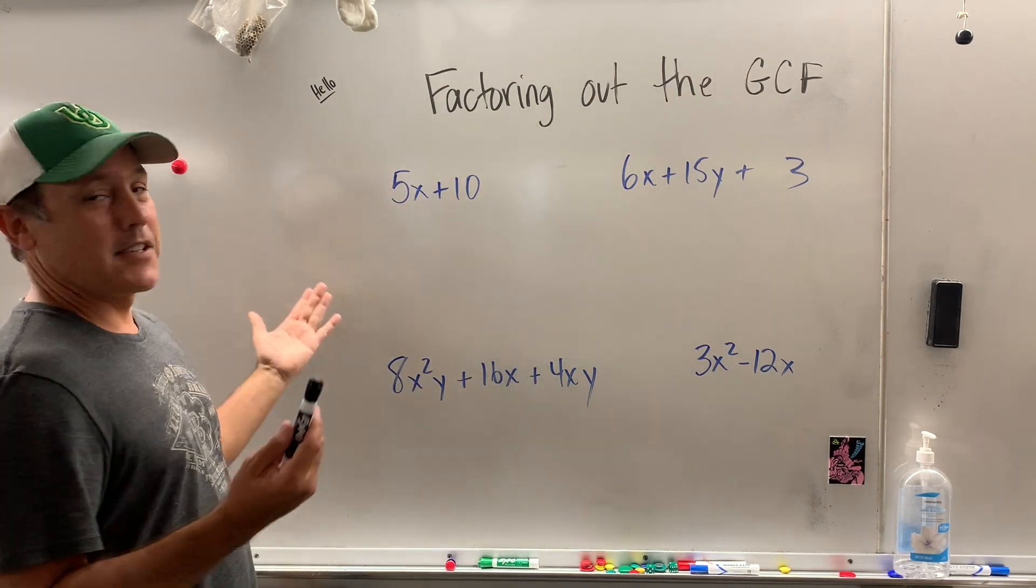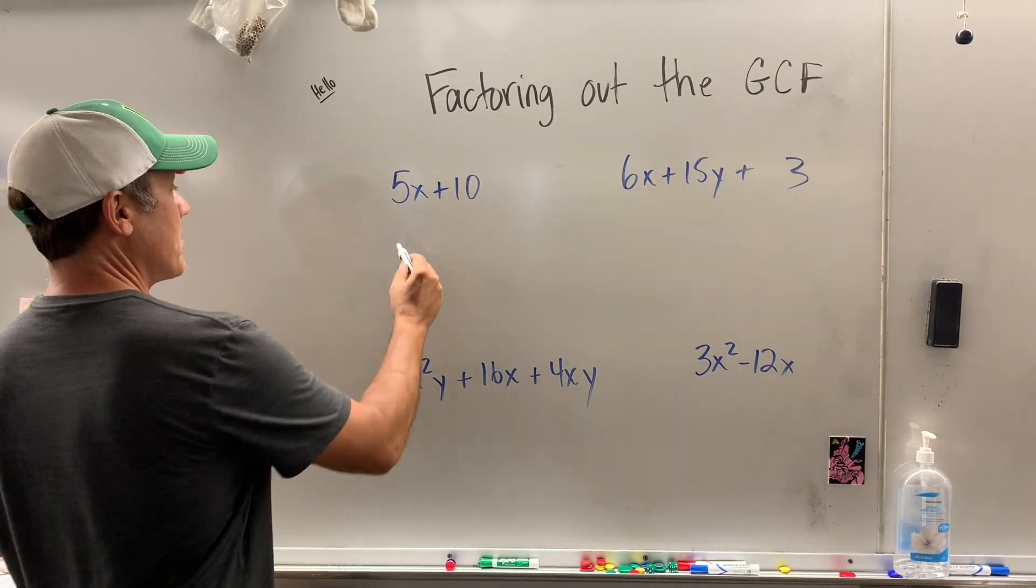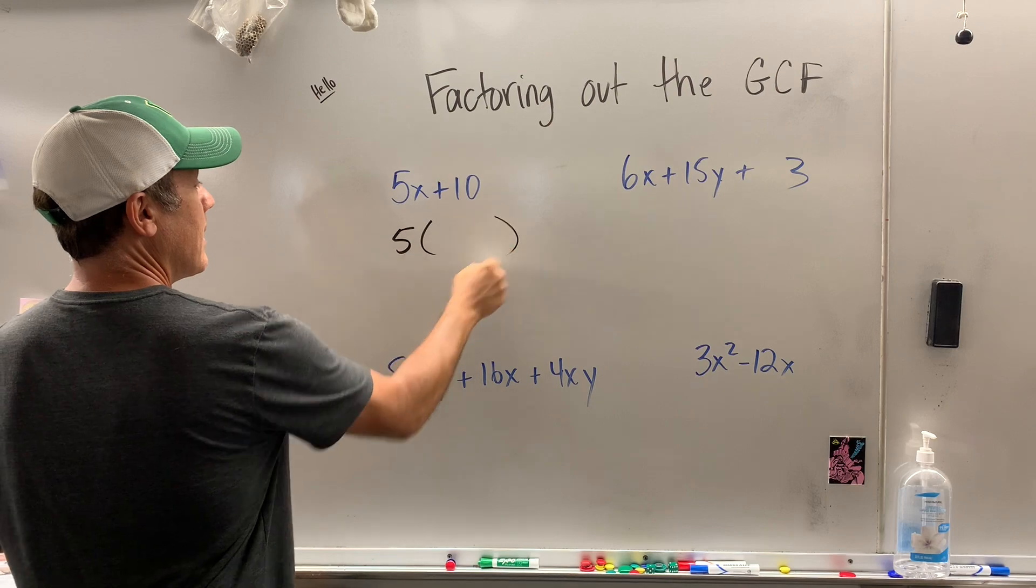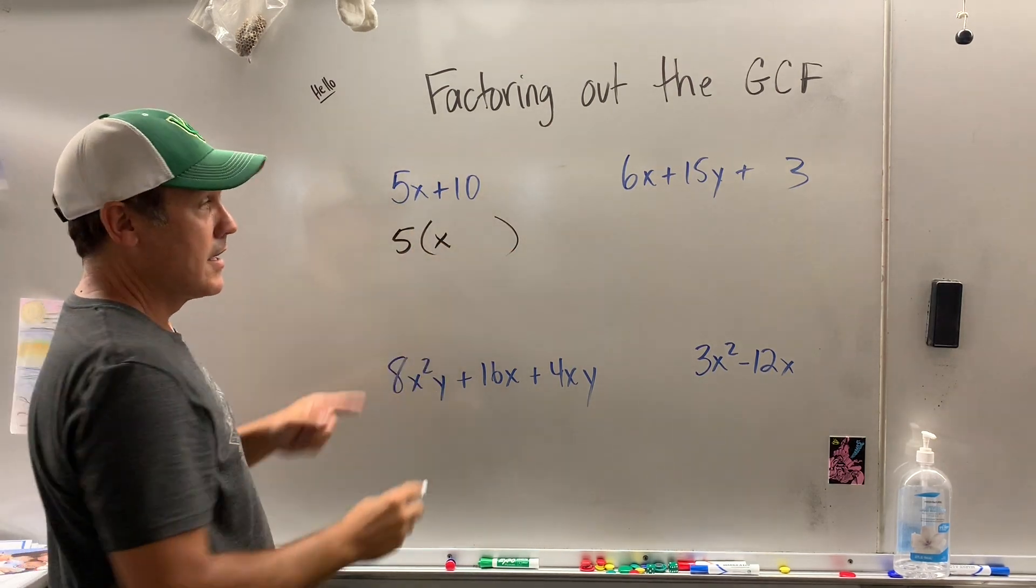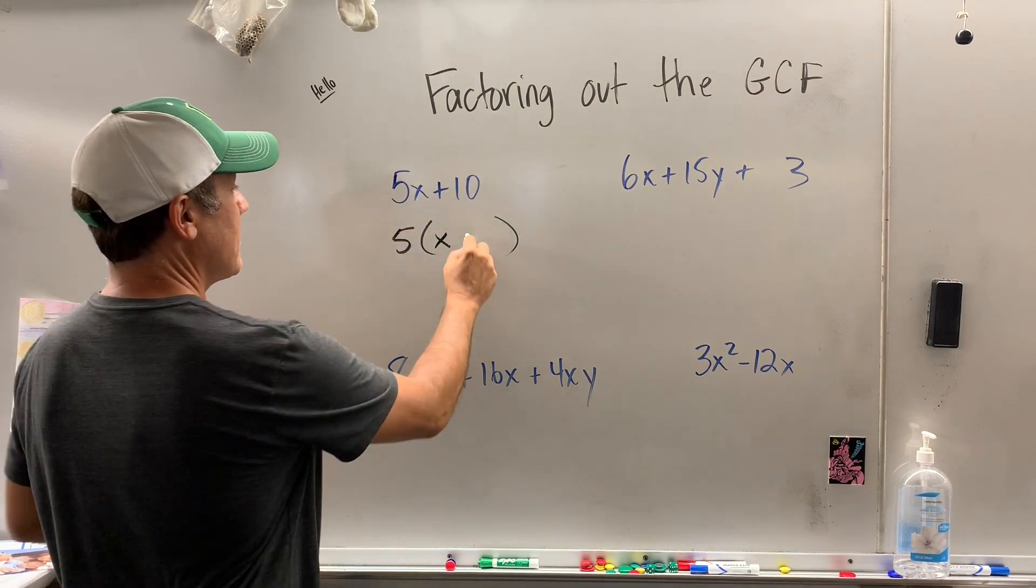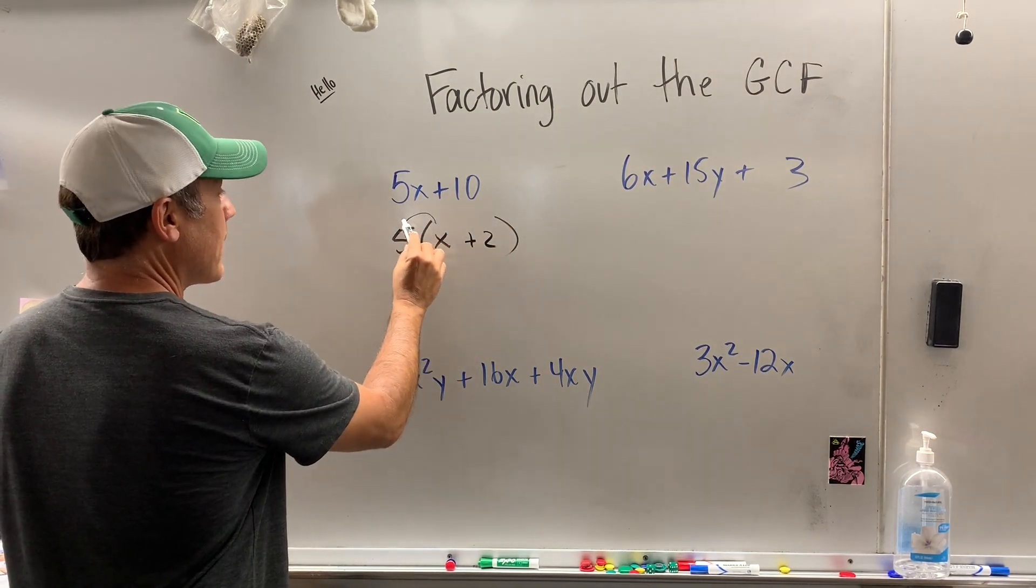Got 5x plus 10. I can see it a mile away. 5 goes into each of these terms, so you pull out the 5, and then what's left over? Well, 5 times what gives me 5x? x. And then 5 times what gives me 10? Plus 2. You want to double check.